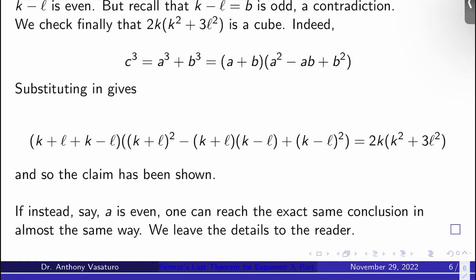This was all done under the assumption that C was even. If A is even — which is really the same case as if B is even by symmetry of the Fermat equation — you can reach almost the exact same conclusion in almost the same way. I'll leave the details to you and give you references at the end of this video.